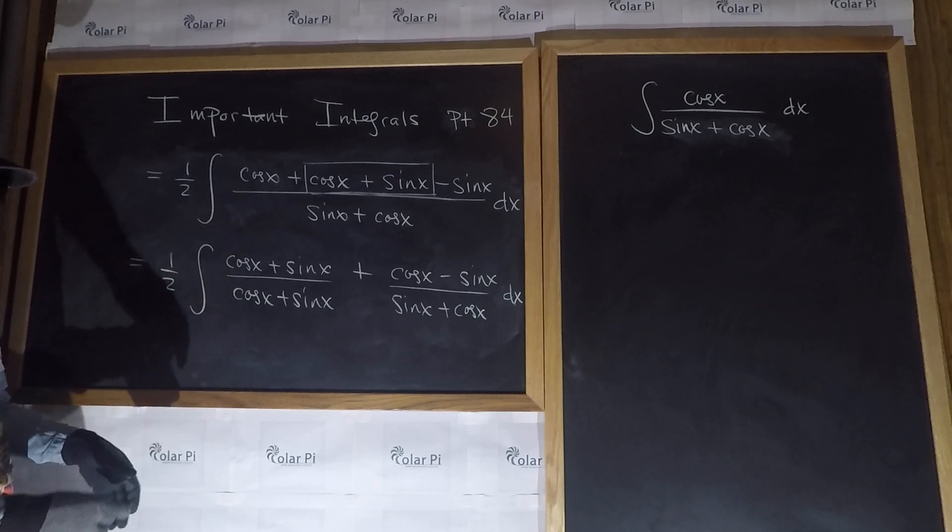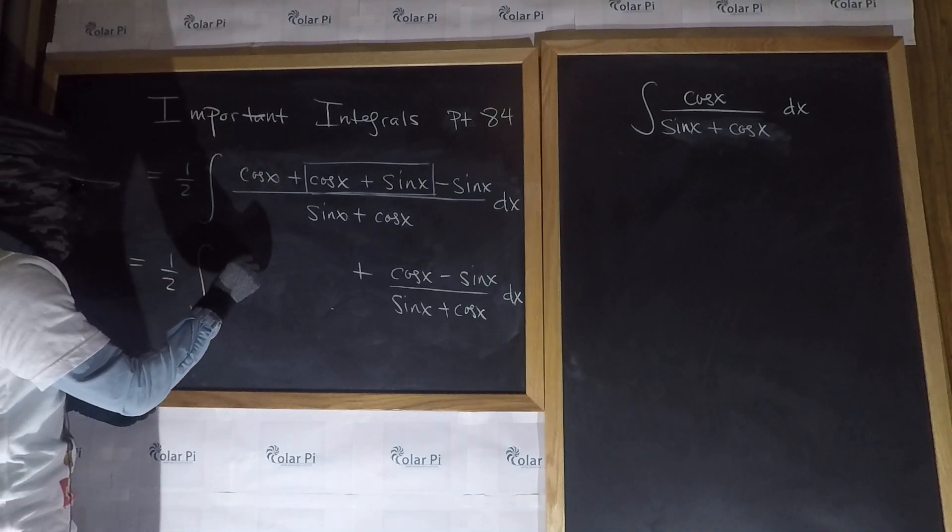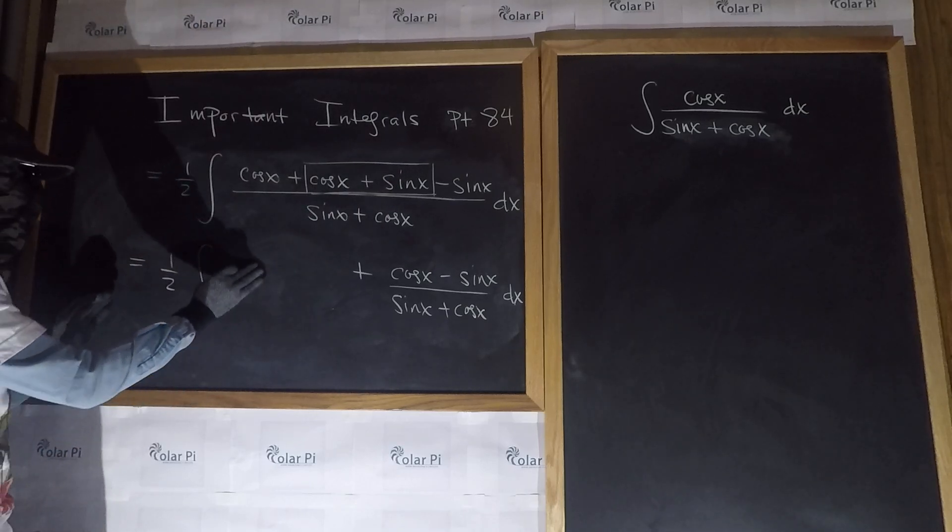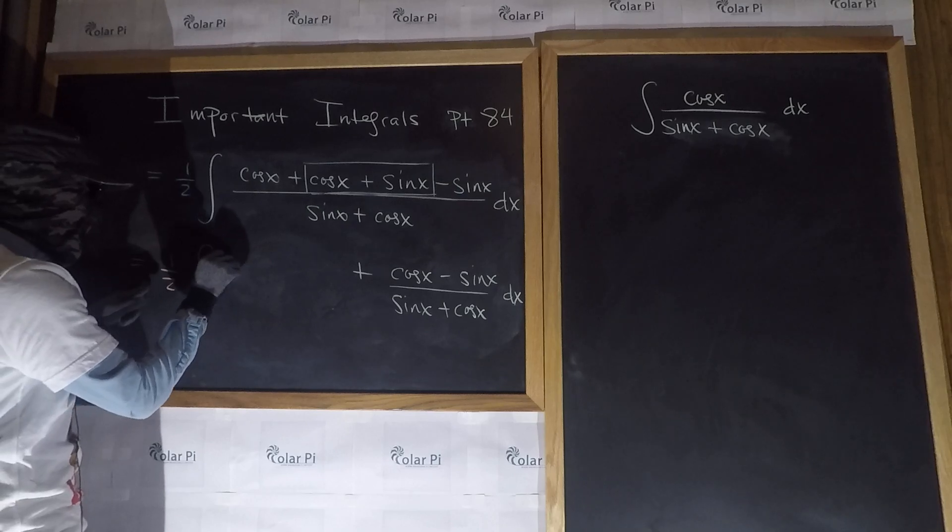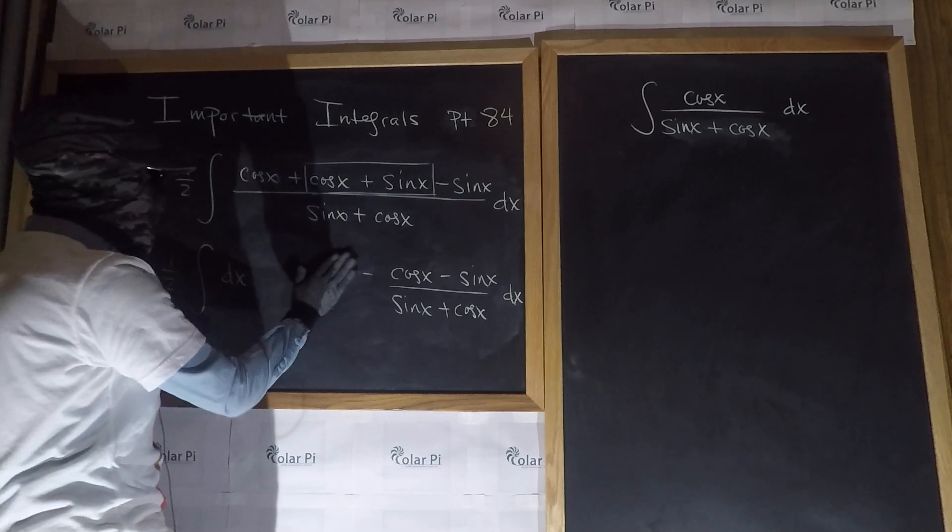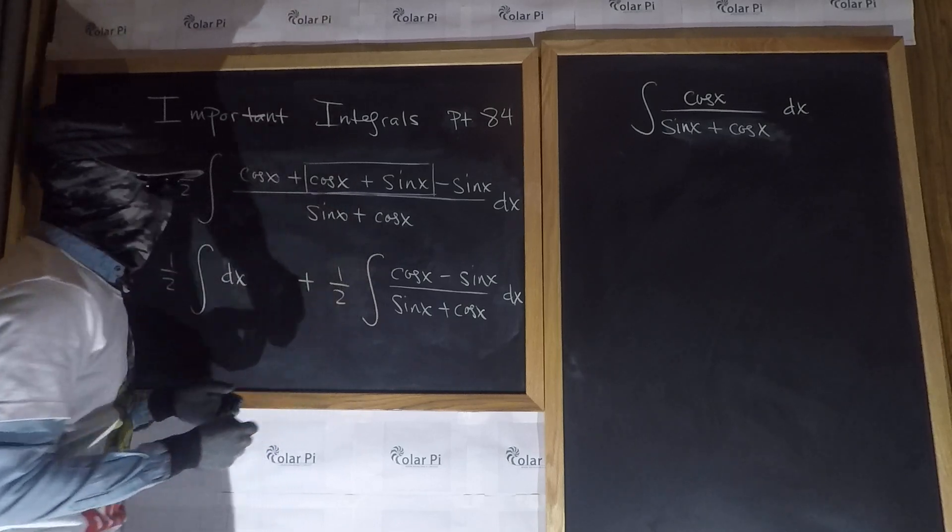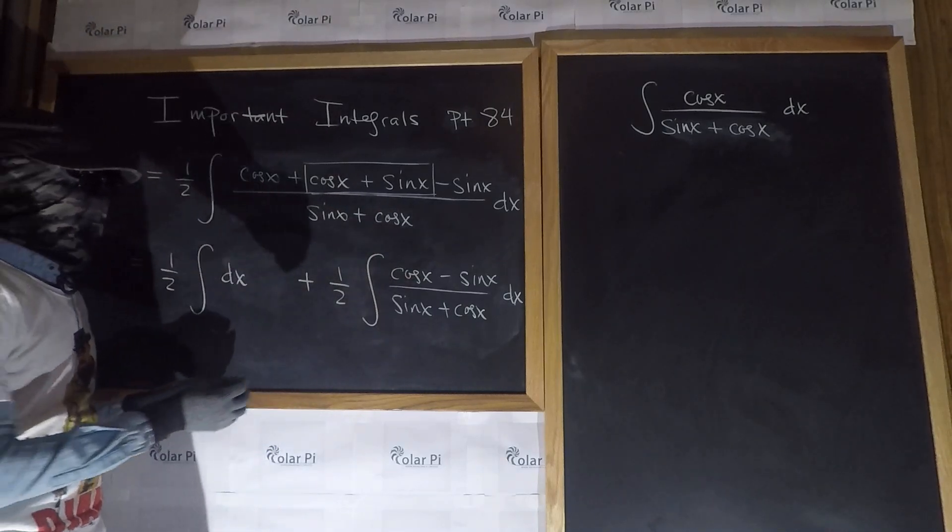Now, this here is one, right? So, I just have one, and so we can split this into two integrals, where the first integral is a half integral of one dx, or just half integral of dx, and then plus a half integral of this. Now, check this out.